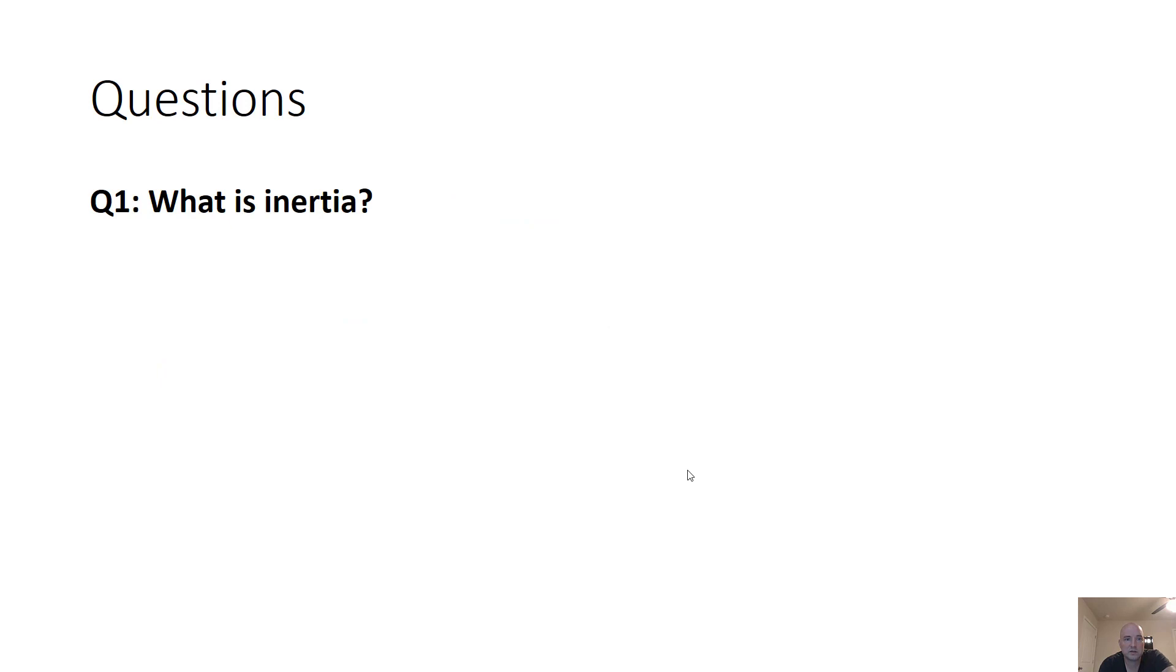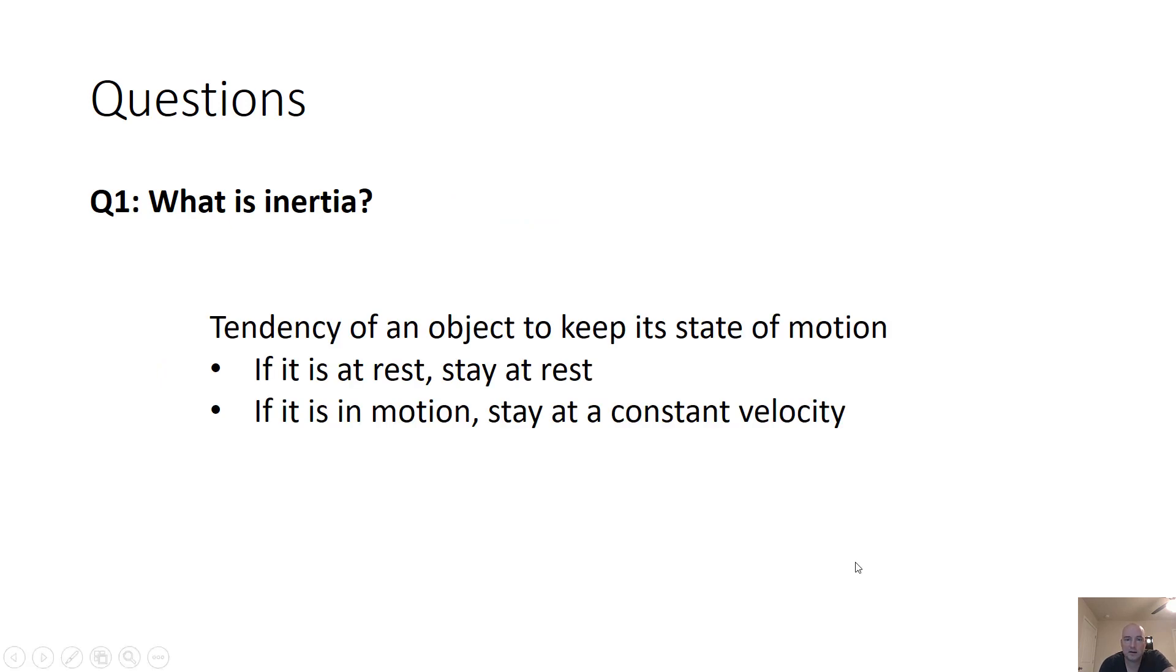So here are some questions. What is inertia? This is the tendency of an object to keep its state of motion. If it's at rest, it's going to stay at rest. If it's in motion, it's going to stay at a constant velocity. Not going to speed up, not going to slow down, and not going to turn, because that would also be a change of velocity.